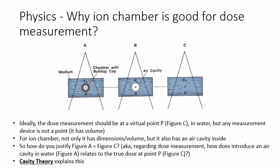This raises a few questions. Number one, the ion chamber has a dimension, a volume, it is not a point. Number two, it has an air cavity inside the chamber. So not only it is not a point, by placing the chamber in the water we introduce an air cavity in the system.